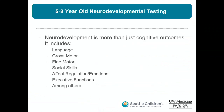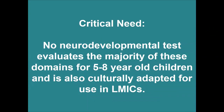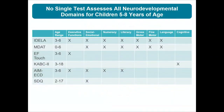Neurodevelopment is more than just cognitive — it includes how a person speaks, walks, and plans. To get a holistic view you have to assess all domains, not just cognition. However, there is a critical gap: no neurodevelopmental test evaluates the majority of these domains in five-to-eight-year-old children while also being culturally adapted to low- and middle-income countries.